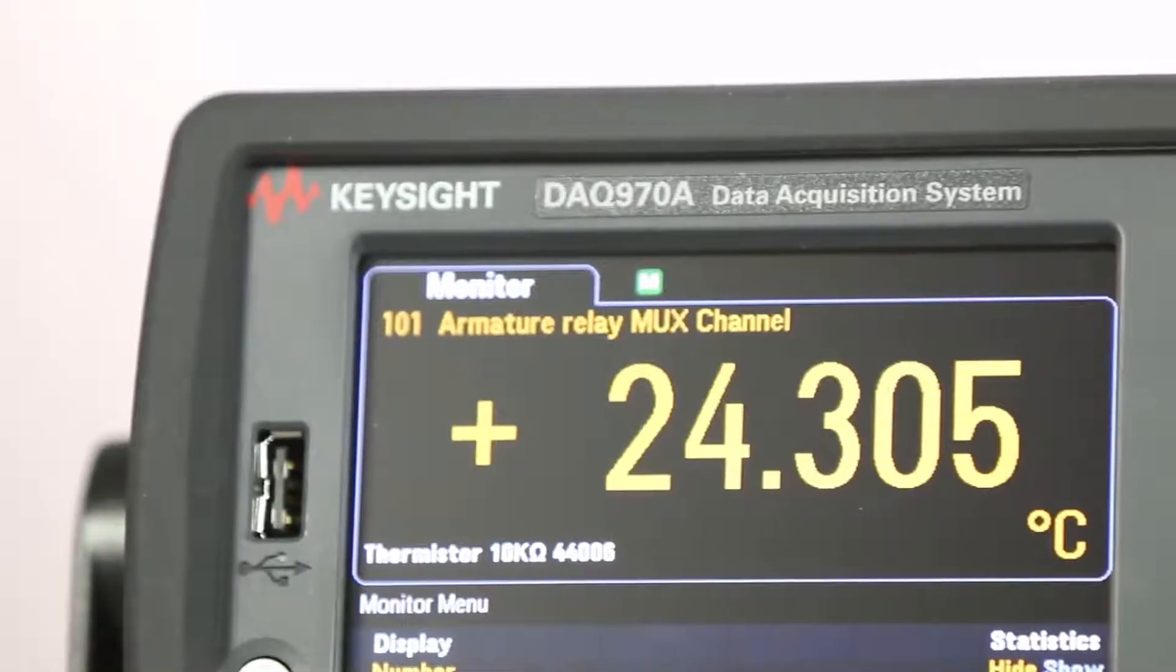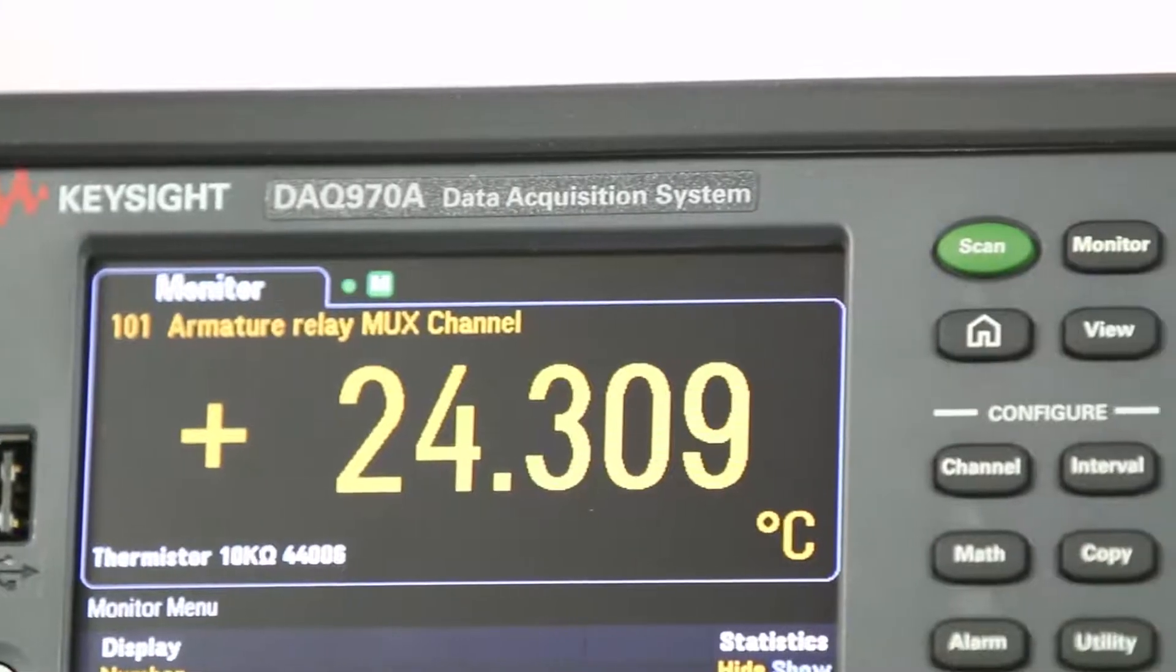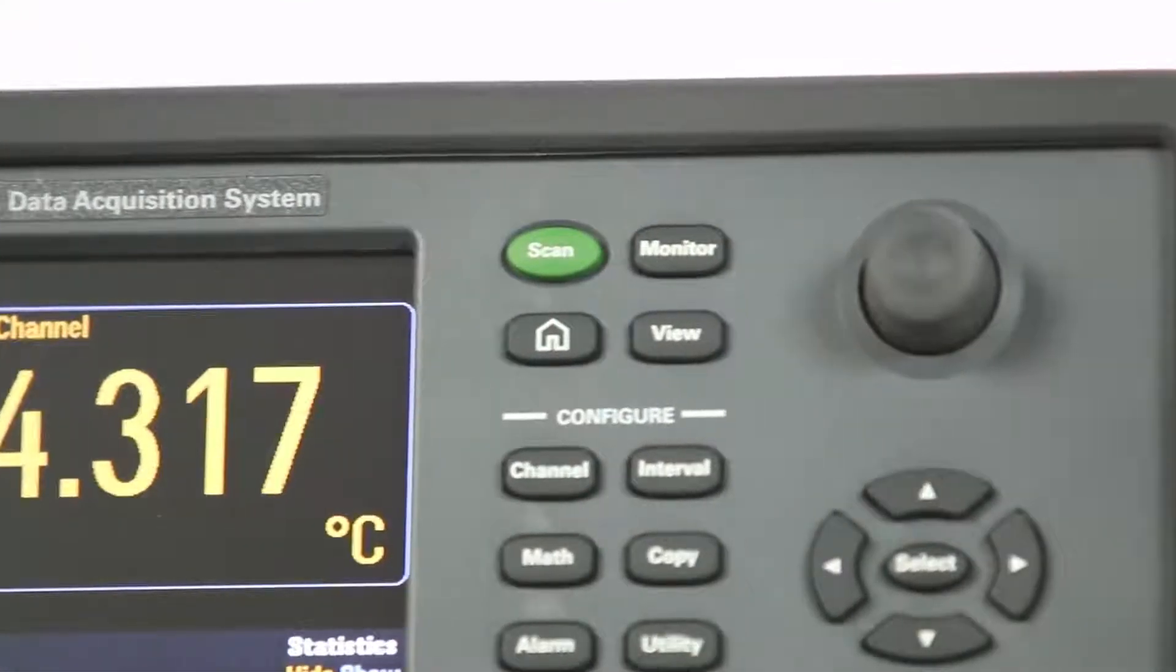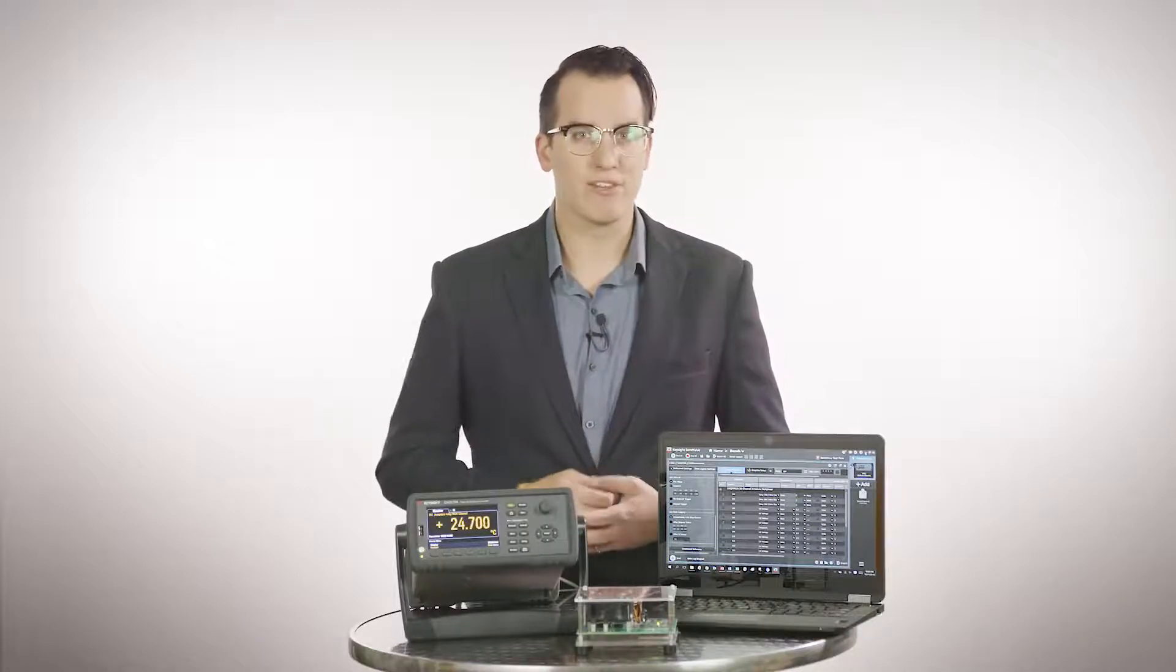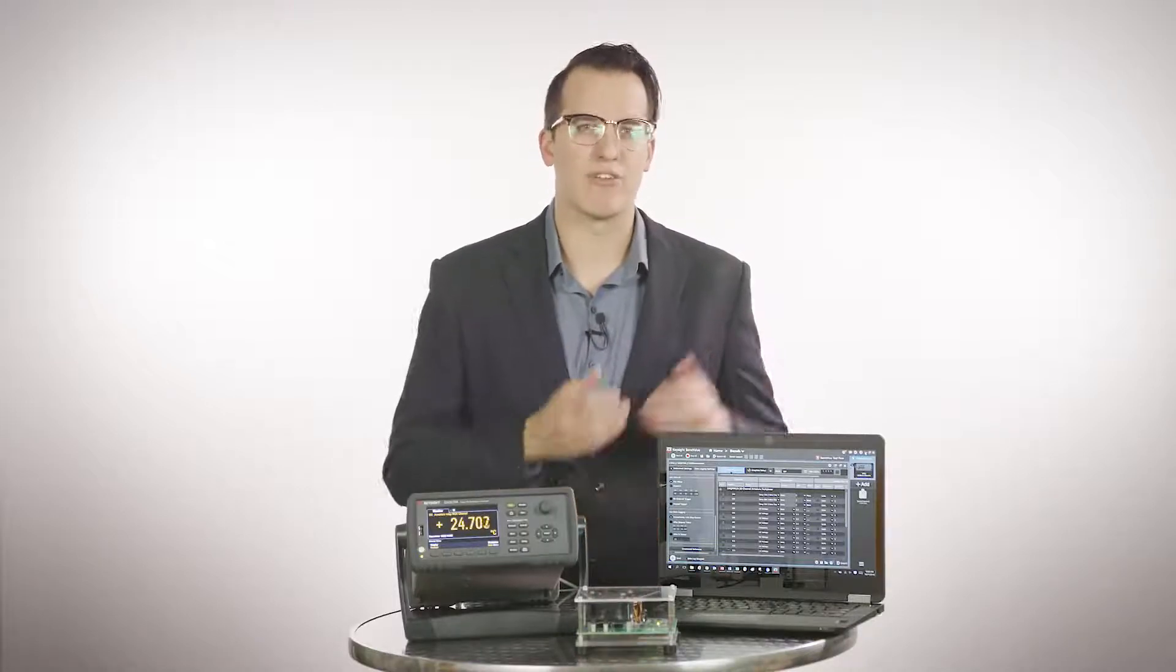The DAC 970A mainframe has a color graphical display with a new user interface. It is now much easier to set up channels because you can use the intuitive LCD screen and soft keys for configuration. It also comes with built-in tools to copy and paste configurations from channel to channel.